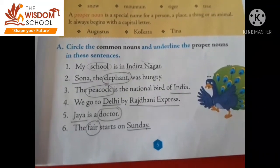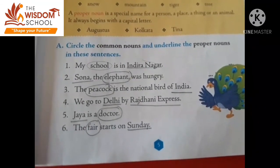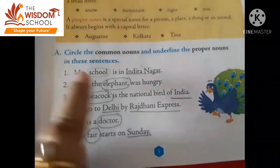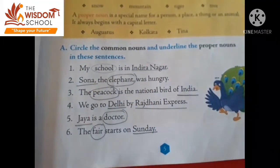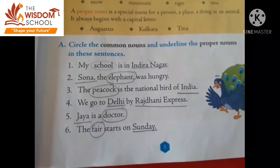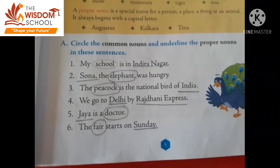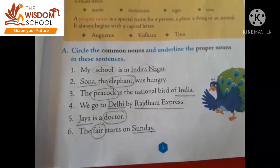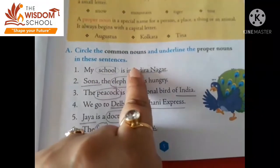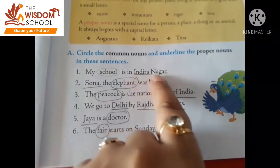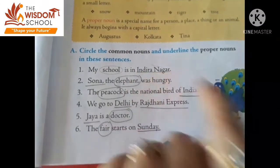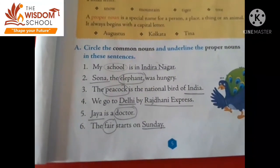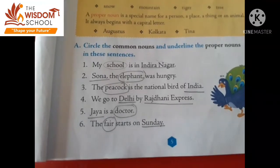See — my school is in Indranagar. 'School' — yahan pe kisi particular school ka name nahi hai, only school hai. So this is the common noun. 'Indranagar' — first letter capital, and it's the name of a particular place. So this is the proper noun.